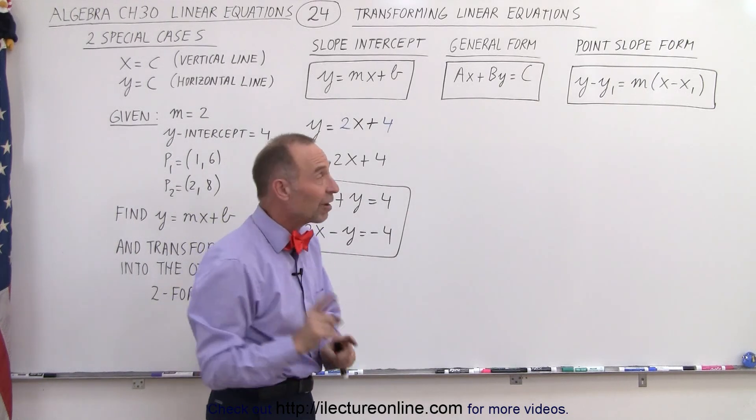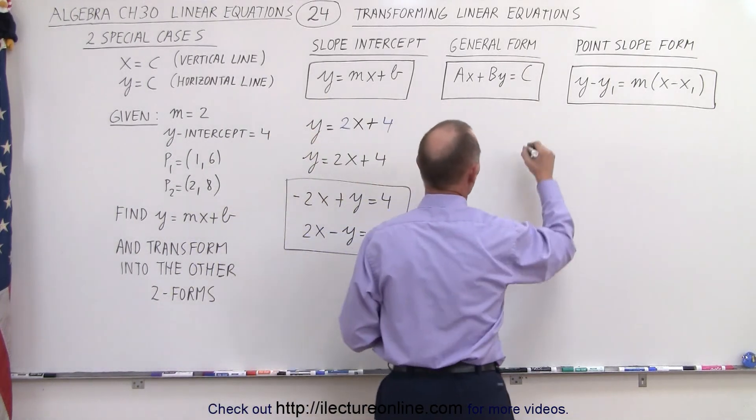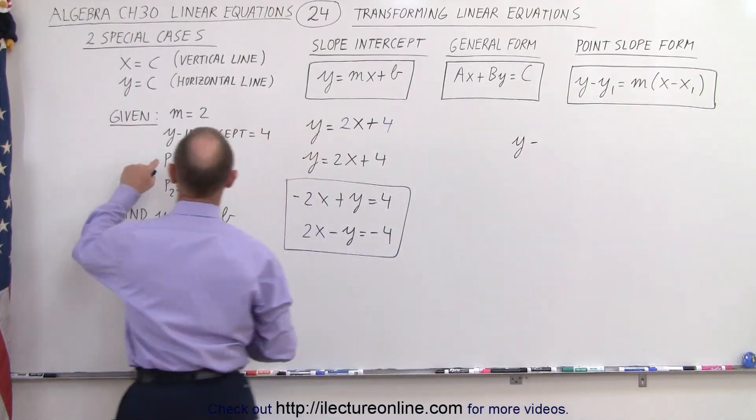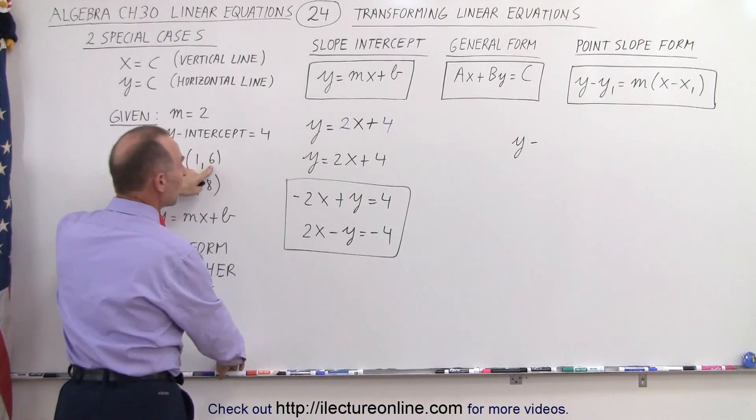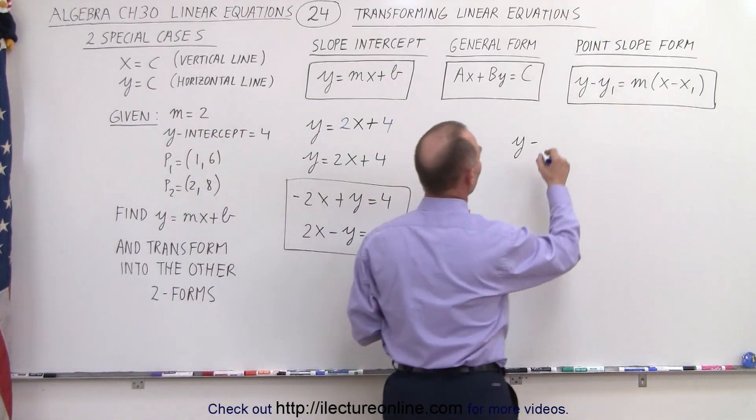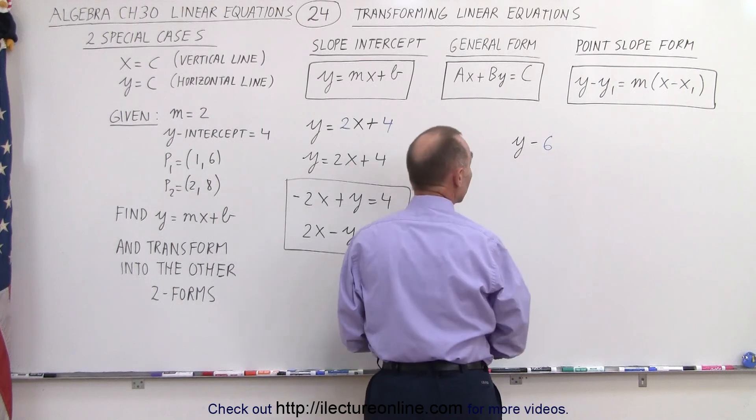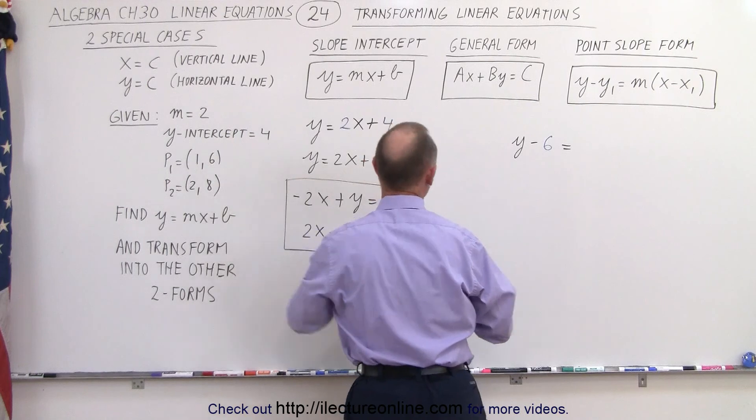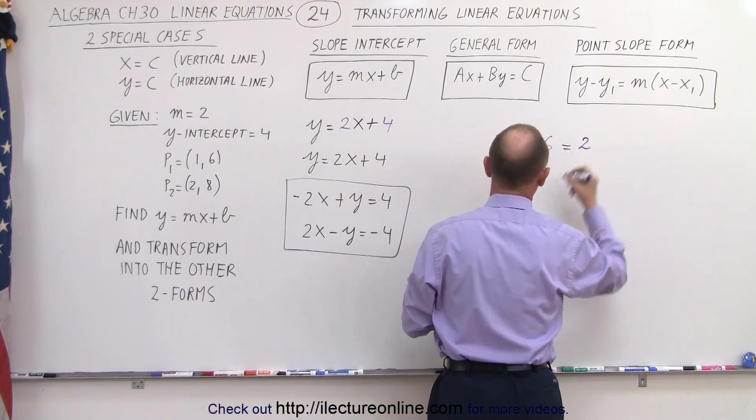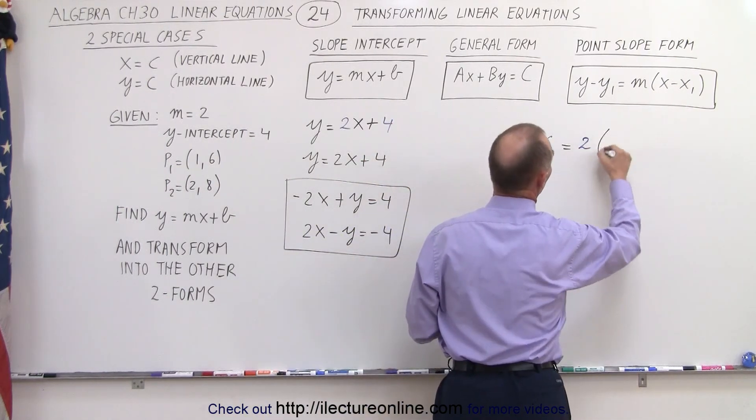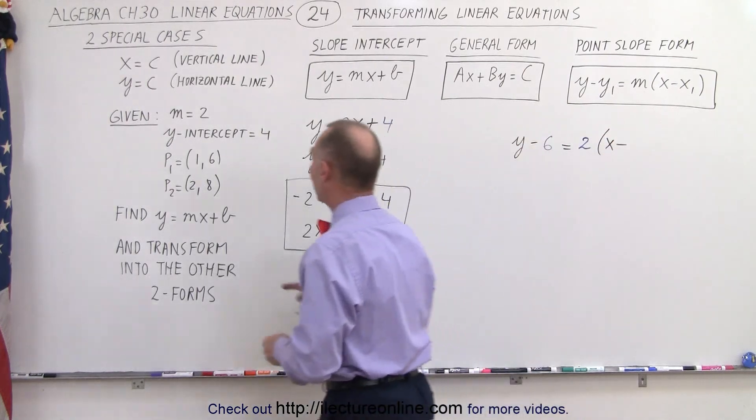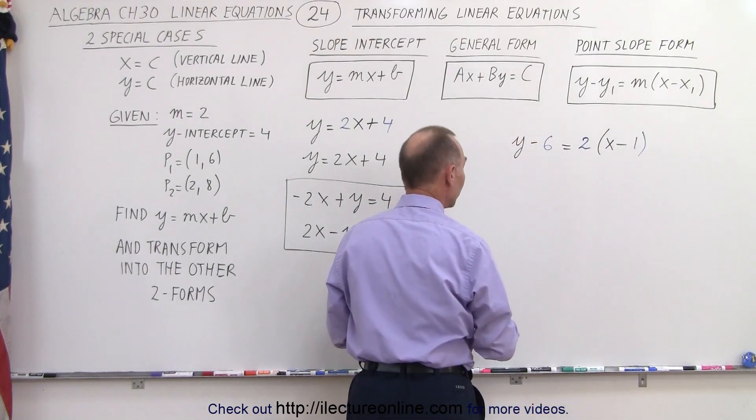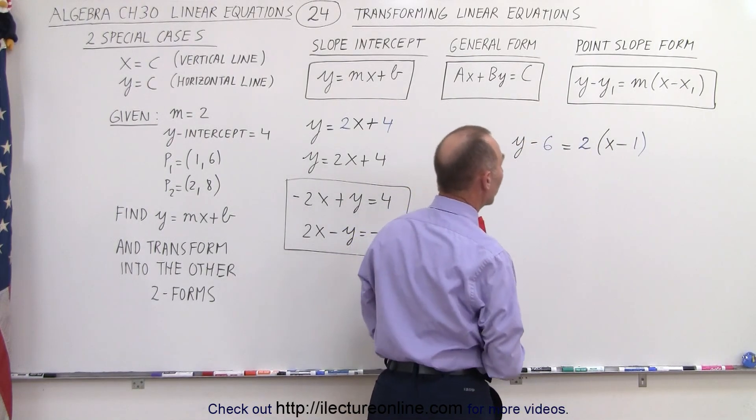Now, you're going to see something very interesting here with the point-slope form. So we have y minus y1. So let's go to point 1, and y1 would be 6. That would be minus 6. So y minus 6 is equal to m. Now the slope is given. The slope is equal to 2, so write the number 2 times. Now we have x minus x1. In this case, x1 is equal to 1. And there we have what we would call the point-slope form of the equation.